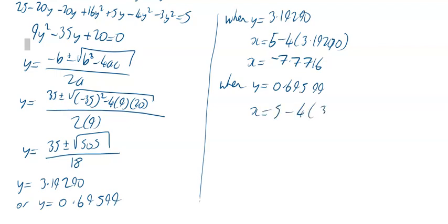Also when y is equal to 0.69599, x is going to be equal to 5 minus 4 times 0.69599, which is going to be equal to 2.21604.